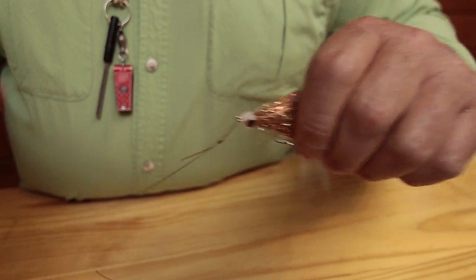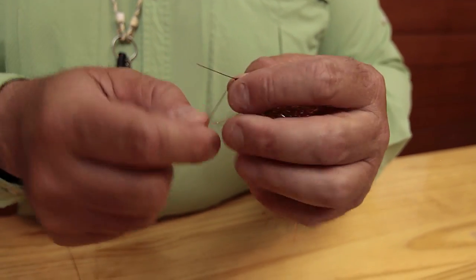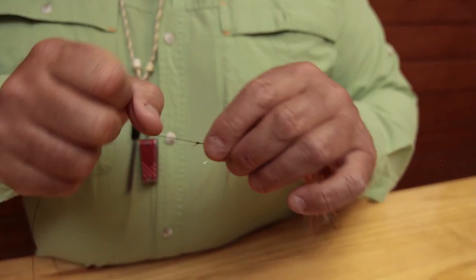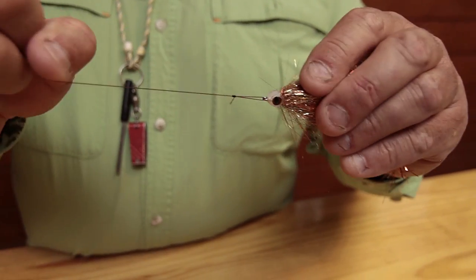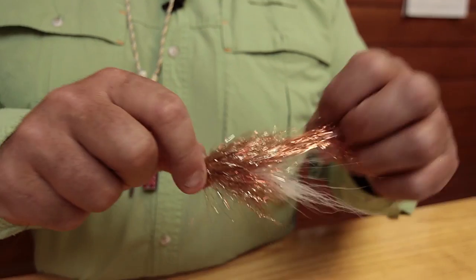Now I have a perfect loop knot. That fly can dance, stall, do whatever it has to do to try to trigger a strike. I learned this knot from a tarpon guide, and I've never had that knot break. If it breaks, it usually breaks in here where the fish nicks it with its teeth, mostly pike.